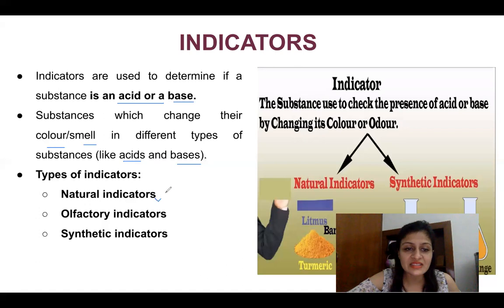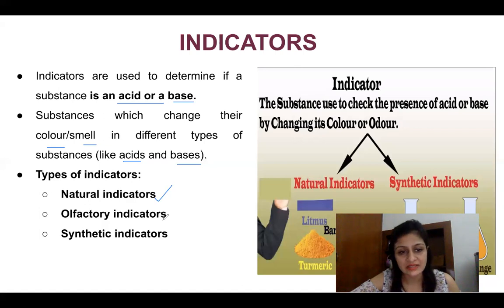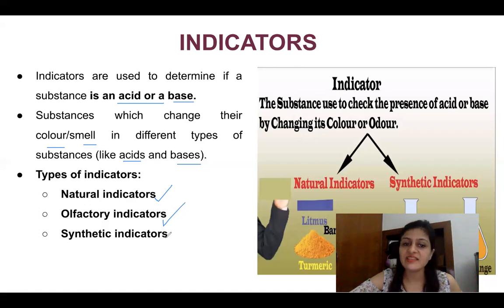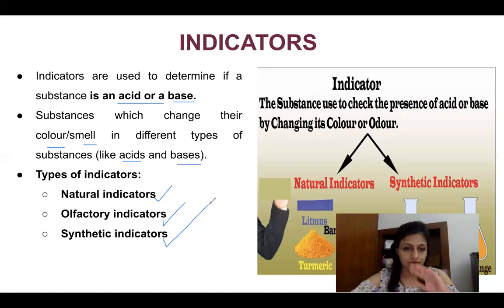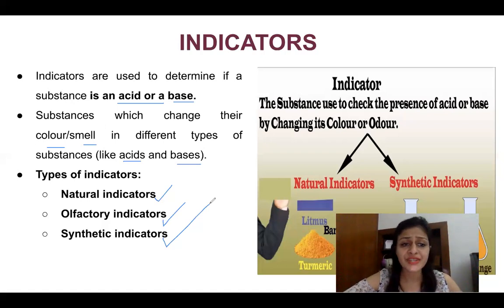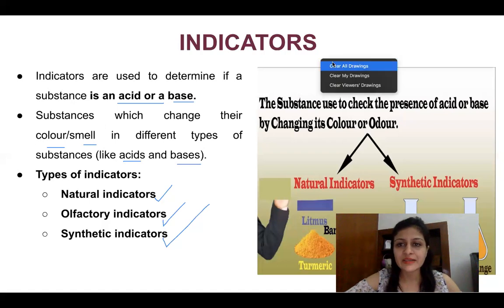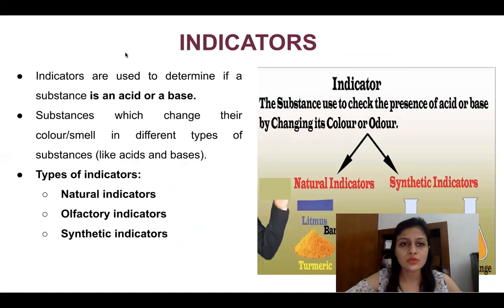Indicators are of three types: natural indicators, which we get from our environment naturally; olfactory indicators, which change their smell; and third, synthetic indicators, which are prepared in the laboratory.